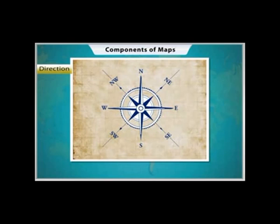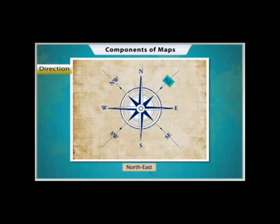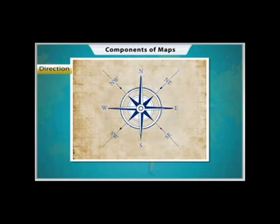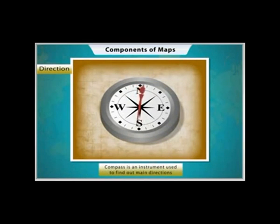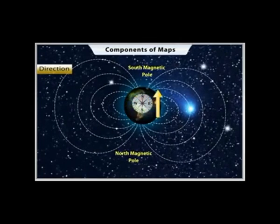Most maps contain an arrow marked with the letter N at the upper right-hand corner — this arrow indicates the north direction. There are four major directions: north, south, east, and west. They are called cardinal points. Four other intermediate directions are northeast, southeast, southwest, and northwest. We can find out the direction of a place with the help of a compass — an instrument used to find main directions. It has a magnetic needle which always points toward the north-south direction.